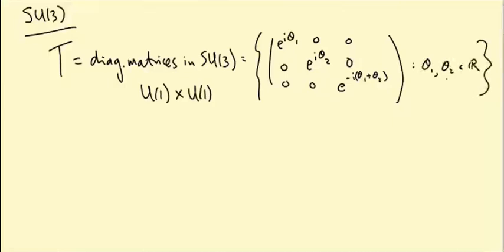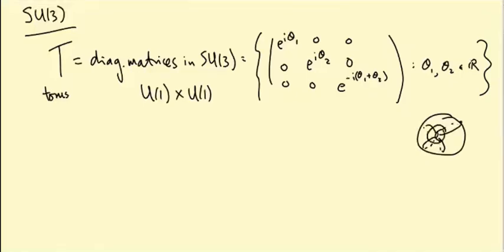So θ₁ and θ₂ are real numbers going between 0 and 2π. T here stands for torus, because a circle times a circle is a torus — imagine taking a circle and rotating it around in a circle, you get a torus. More generally, for more general groups, we're going to have an analogue of this group T called a maximal torus.